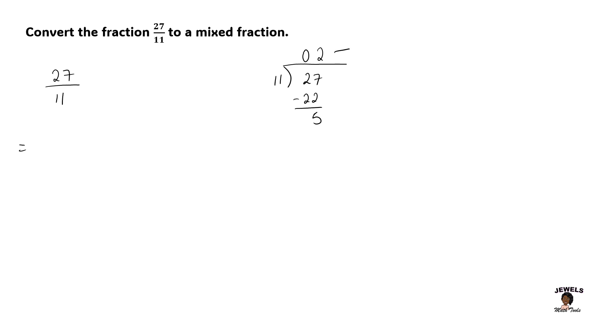So again, remember that our number at the top will be our whole number. My remainder, which is 5, will be my numerator. And the number we divided by, which is 11, will remain as our denominator.